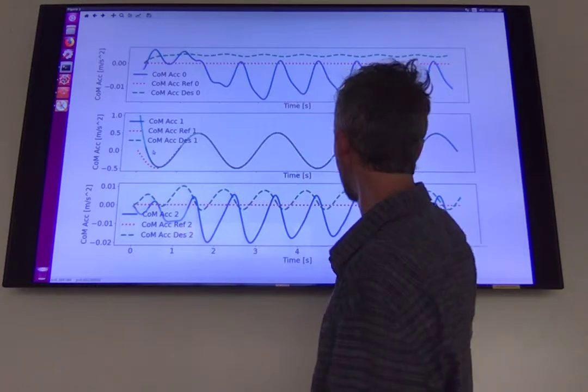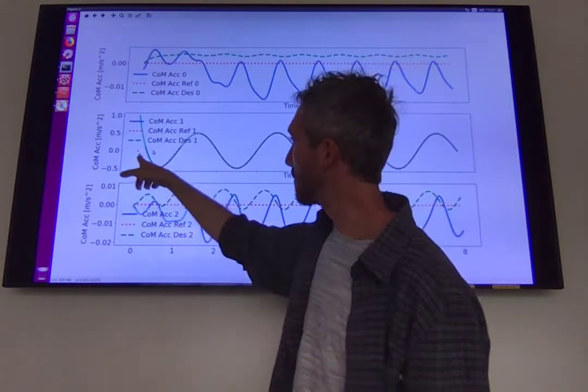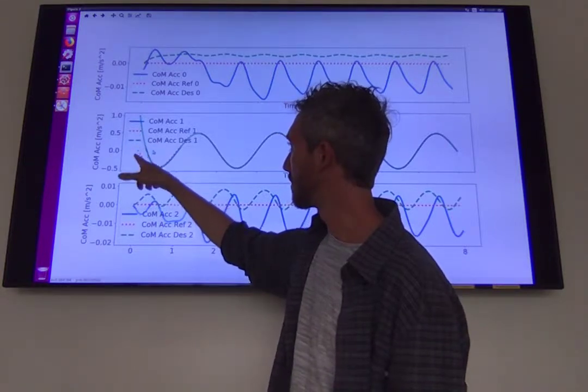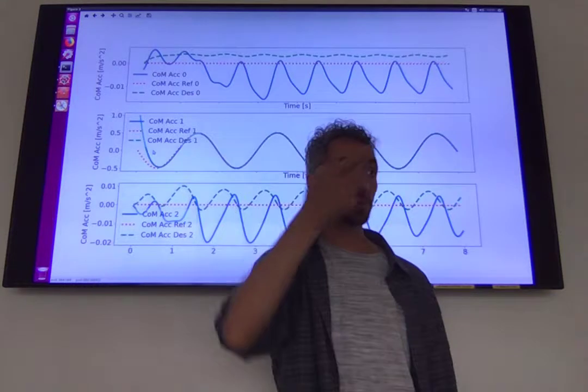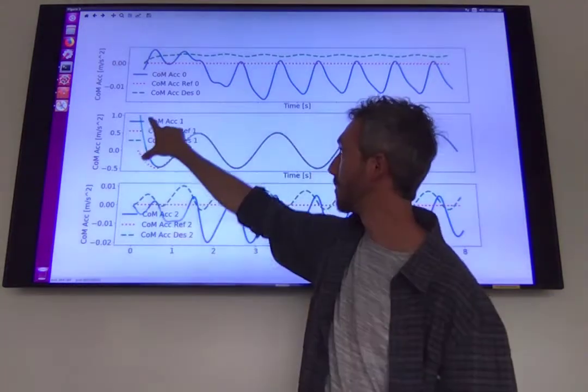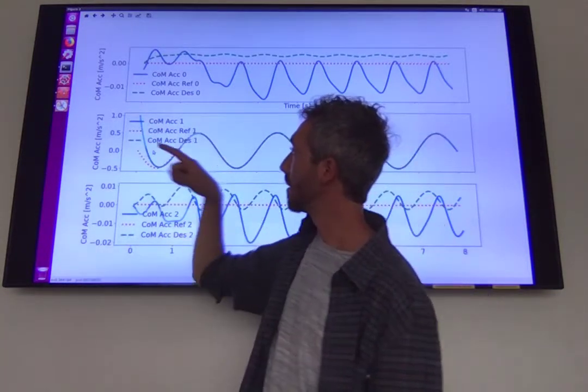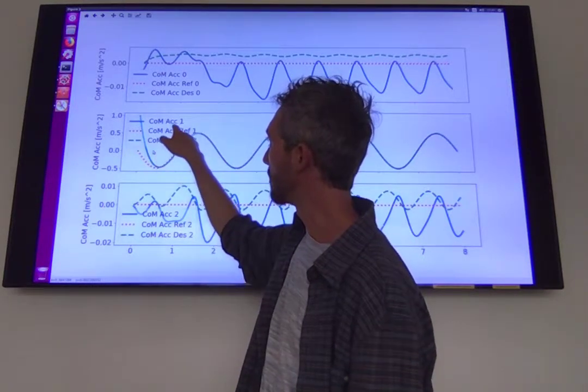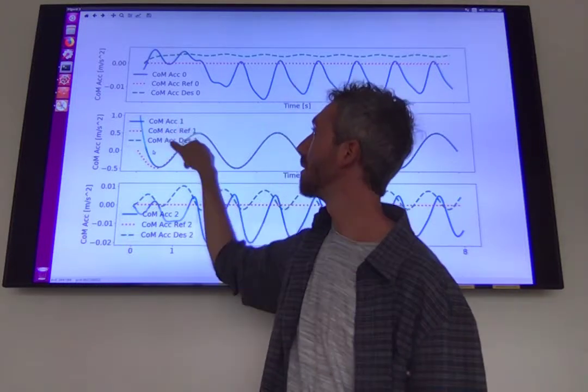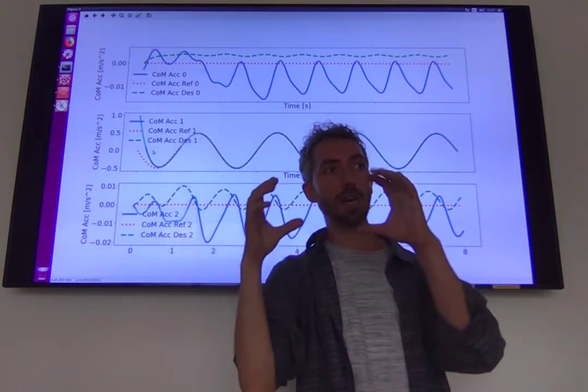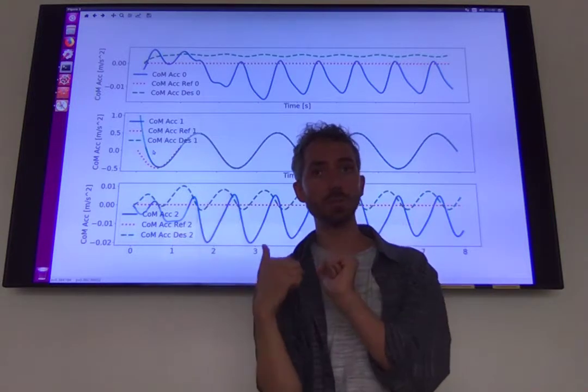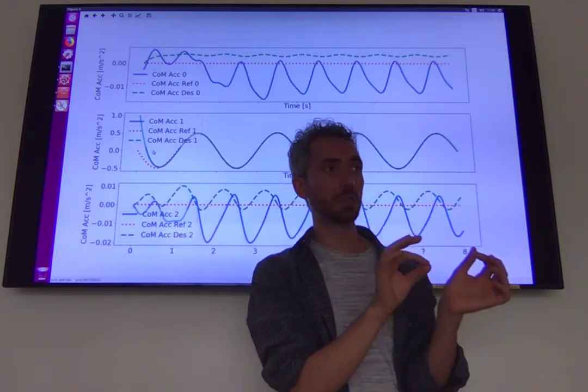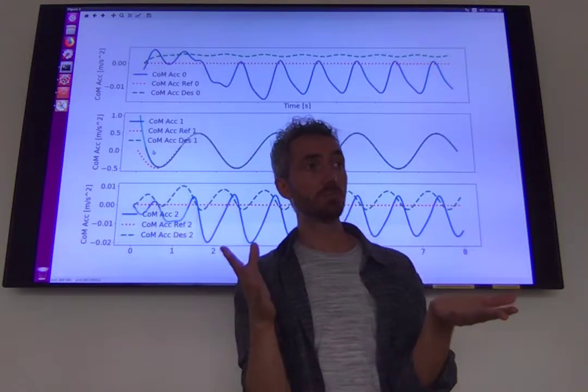So after a while the three are the same, but in the beginning we can see that the reference is not the same as the desired because we have a tracking error in velocity especially, which explains why it's different. But we can see that here the desired and the real one are always the same, which means that even if the center of mass task is a cost function and not a constraint, it is satisfied as if it was a constraint because it is feasible.